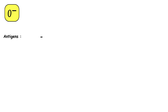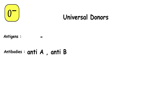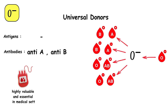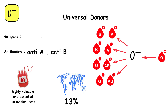O negative blood type lacks A, B, and RH antigens on the red blood cells, but has both anti-A and anti-B antibodies in the plasma, making these individuals universal donors. They can donate to any ABO and RH type, but can only receive blood from O negative donors. Its universal donor status makes O negative blood highly valuable and essential in medical settings. Around 13% of the global population has O negative blood, which is essential for emergency transfusions.